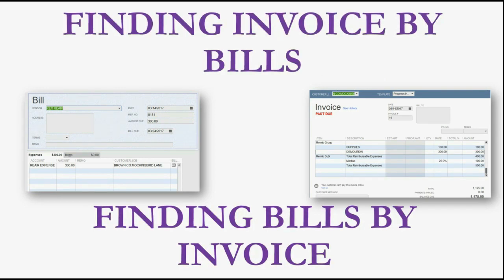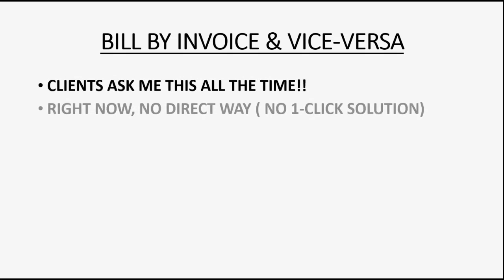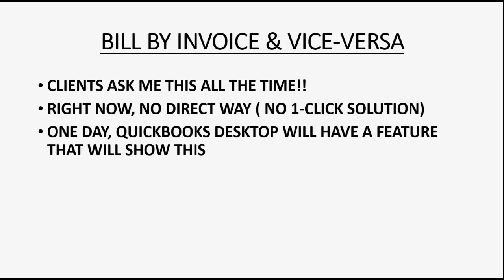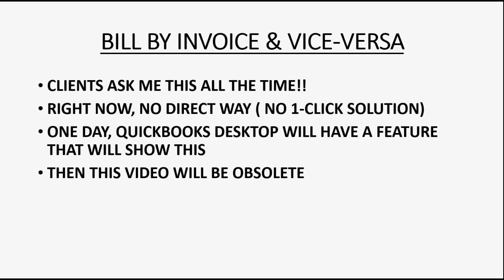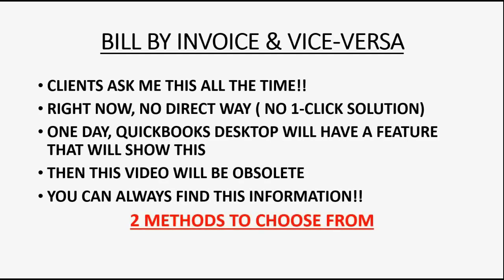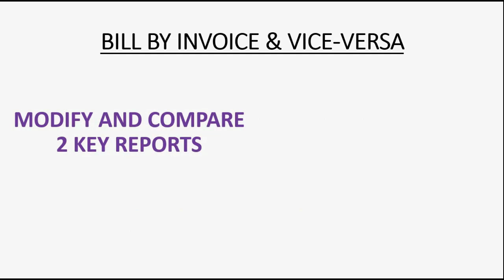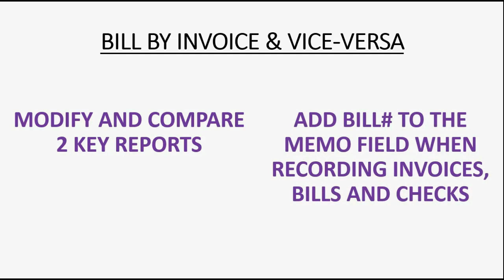It would be extremely helpful to be able to find bills by the invoices they were placed on, or find invoices by the bills or checks that were placed on them. My clients ask me how to find one from the other all the time. Right now, there is no direct way, no one-click solution to look at one and find the other. One day, QuickBooks Desktop will have a feature that will show this, and on that day this video will become obsolete. But you can always find this information if you look carefully. There are two different ways that you can find one from the other.